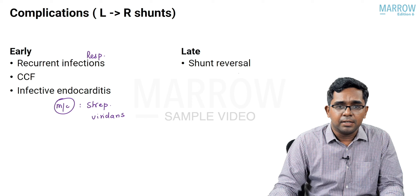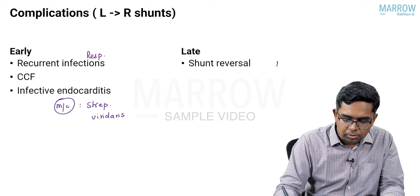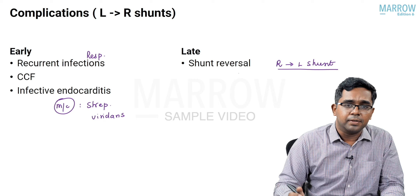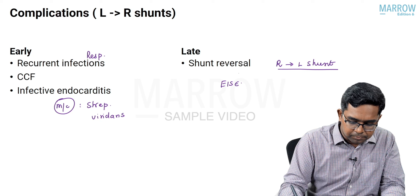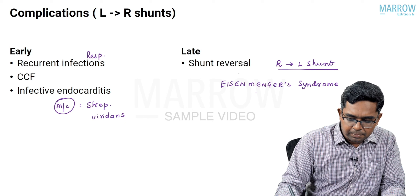The late complication occurs many years later and includes shunt reversal, wherein the left-to-right shunt changes to a right-to-left shunt. This is associated with irreversible changes in the pulmonary vasculature and right ventricular hypertrophy. This shunt reversal is called Eisenmenger's syndrome, and the patient develops cyanosis as well as clubbing.